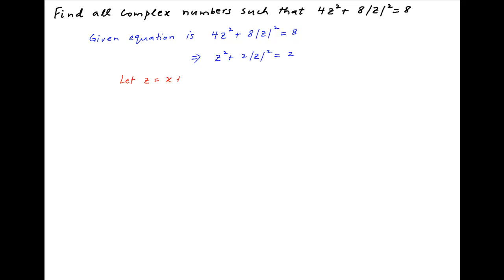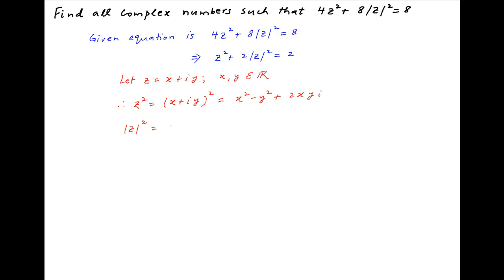Let z equal x plus iy, where x and y are real numbers. Therefore, z squared equals x plus iy whole squared, which equals x squared minus y squared plus 2xy i. The square of the absolute value of z equals x squared plus y squared.